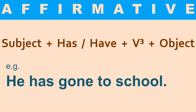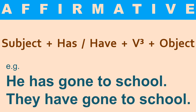See the example: 'He has gone to school.' He is your subject, has is your helping verb, gone is the third form of the verb, and to school is the complement. Another example: 'They have gone to school.' Here I have used have with they. Wherever the subject is third person singular, use has. With the rest of the subjects, use have.